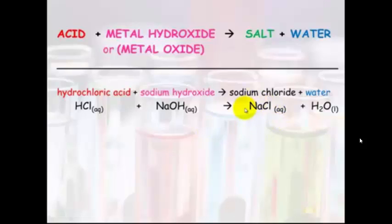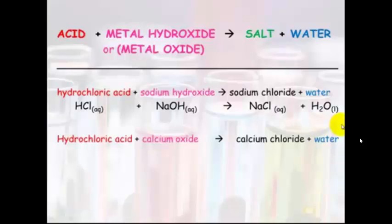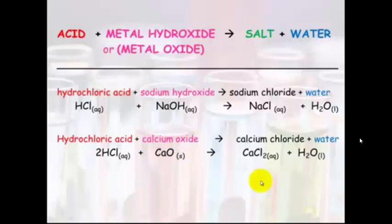How do you tell if your salt is soluble? You look it up on the solubility table. Hydrochloric acid and calcium oxide will make calcium chloride plus water. Remove your two hydrogens and your oxygen. What's your salt that's left? Calcium plus chloride.